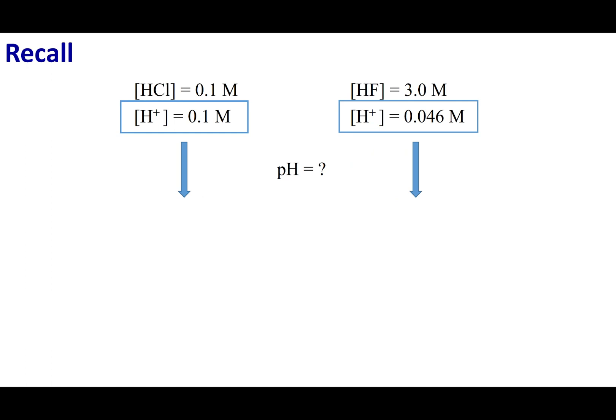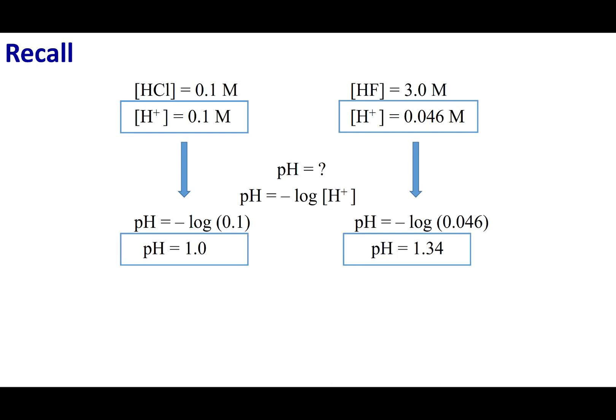Let's think about a previous calculation we did, the H+ concentration of HCl and HF. We calculated the H+ concentrations of each one of these. Now we can take the negative log of this to get the pH. If we get the pH of these things, we can calculate the numbers: pH of 1, pH of 1.34. I want you to take a look at the relationship between the pH and the H+ concentration. What you'll note is that the higher the H+ concentration, the lower the pH is going to be. And the converse is true. The lower the H+ concentration, the higher the pH is going to be.